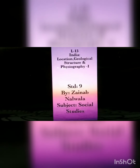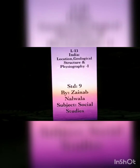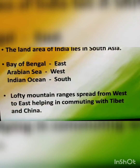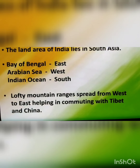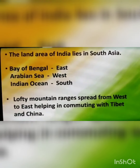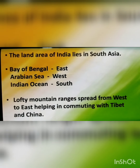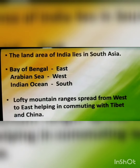Now in today's topic, we will discuss about the land of India. The land of India lies in South Asia. In the North we have mountainous regions, and in the South we have three water bodies — Bay of Bengal in the East, Arabian Sea in the West, and Indian Ocean to the South. The mountainous regions in the North are spread from West to East, helping in commuting and trading with other countries like Tibet and China.